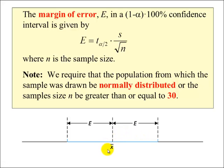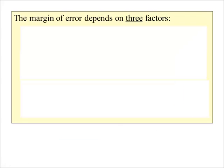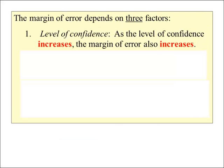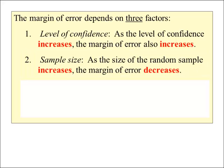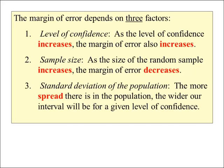Visually, x-bar is always exactly in the middle of the confidence interval — subtracting the margin of error gives the lower limit, adding it gives the upper limit. The margin of error depends on three factors: (1) the level of confidence — as confidence increases, margin of error increases; (2) sample size — as sample size increases, margin of error decreases; (3) population spread — the more spread in the population, the wider the confidence interval for a given confidence level.